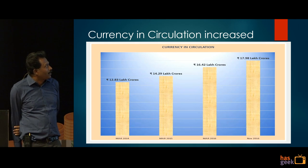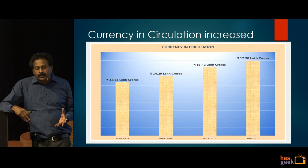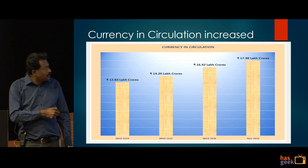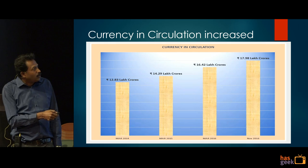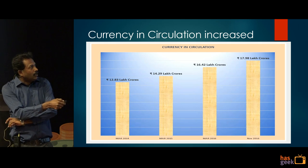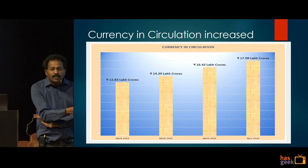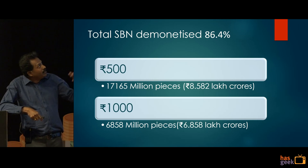I looked at how much currency was in circulation. The government had been saying demonetization was planned for a long time — some media said over a year. When the current government took charge, currency in circulation was around 12.83 lakh crore, rising to 14.29 lakh crore, then 16.42 lakh crore by March 2016. By November 4th it was 17.98 lakh crore — meaning between March and November the government itself pushed more than 1.6 lakh crore of currency into the market right before announcing demonetization.